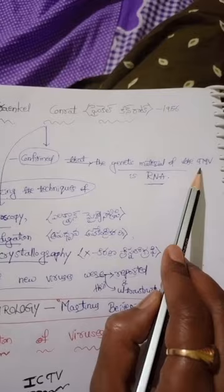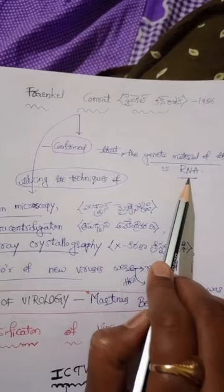Frenkel-Khanrath confirmed that the genetic material of TMV is RNA. The genetic material of TMV and RNA is described here.